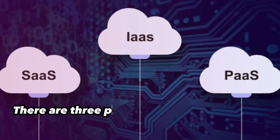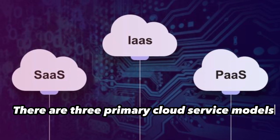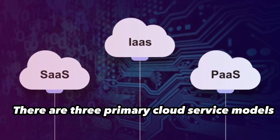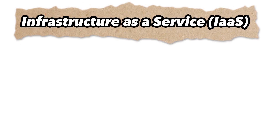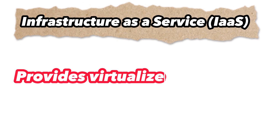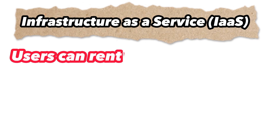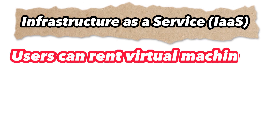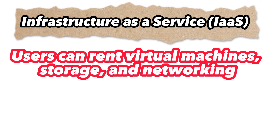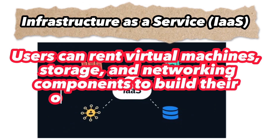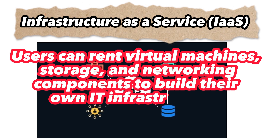There are three primary cloud service models. Infrastructure as a Service (IaaS) provides virtualized computing resources over the internet. Users can rent virtual machines, storage, and networking components to build their own IT infrastructure.